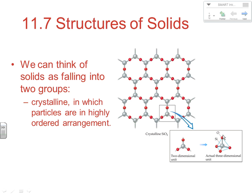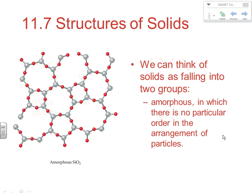The first section deals with the structures of solids. We can think of solids as falling into one of two main categories: crystalline, in which the particles are in a highly ordered arrangement — you can see in two and three dimensions a very ordered pattern in that solid. We can also sometimes have solids that are called amorphous arrangements.